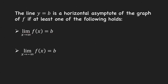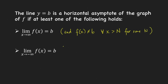There is an additional assumption here. It's not only that the limit at infinity equals b, but we also assume that the function values are not equal to b for all x values greater than n, for some number n. Similarly, the limit at negative infinity equals b, and we also assume that the function values are not equal to b for all x, for some number n.